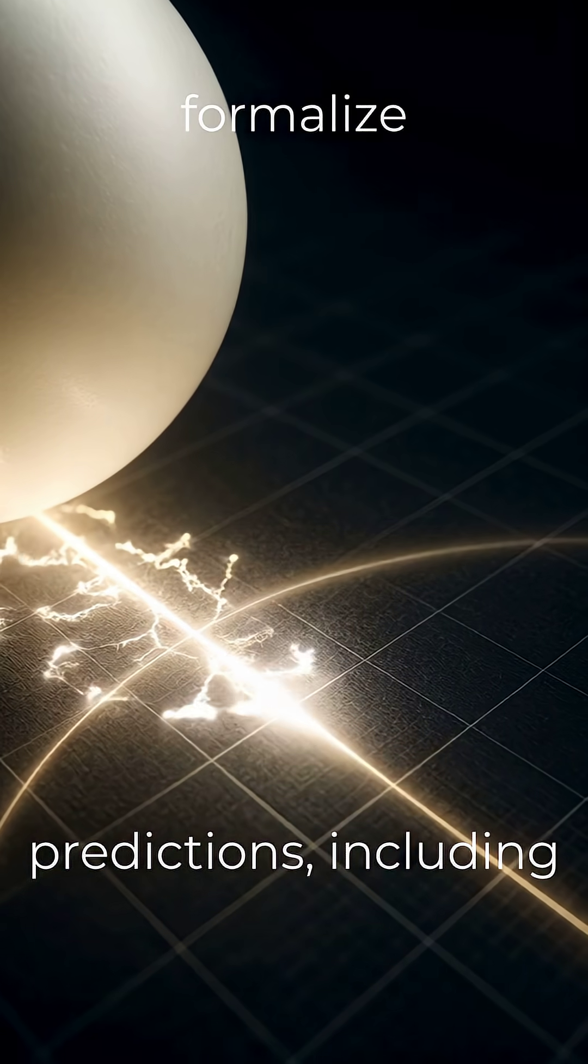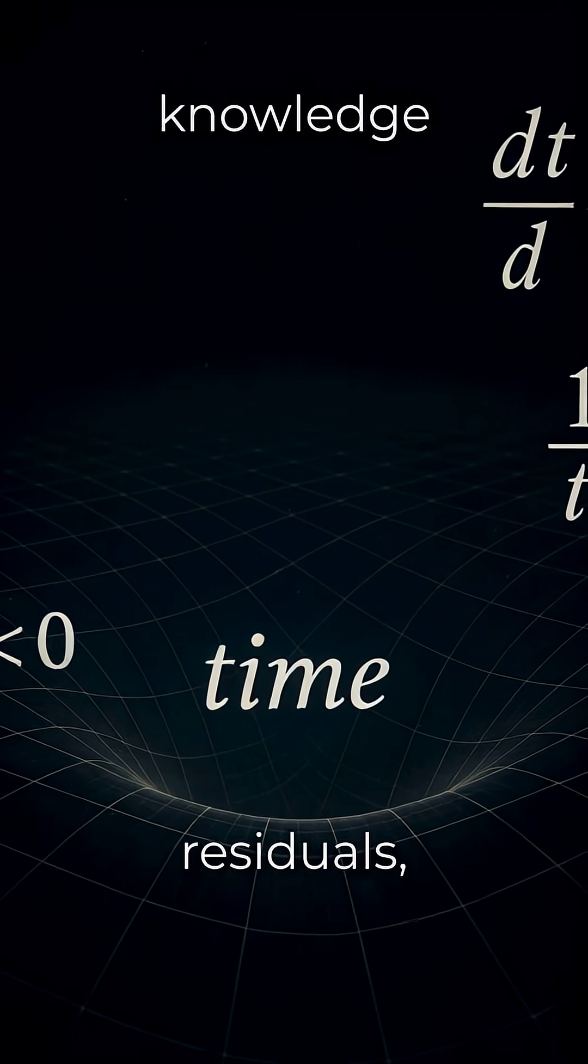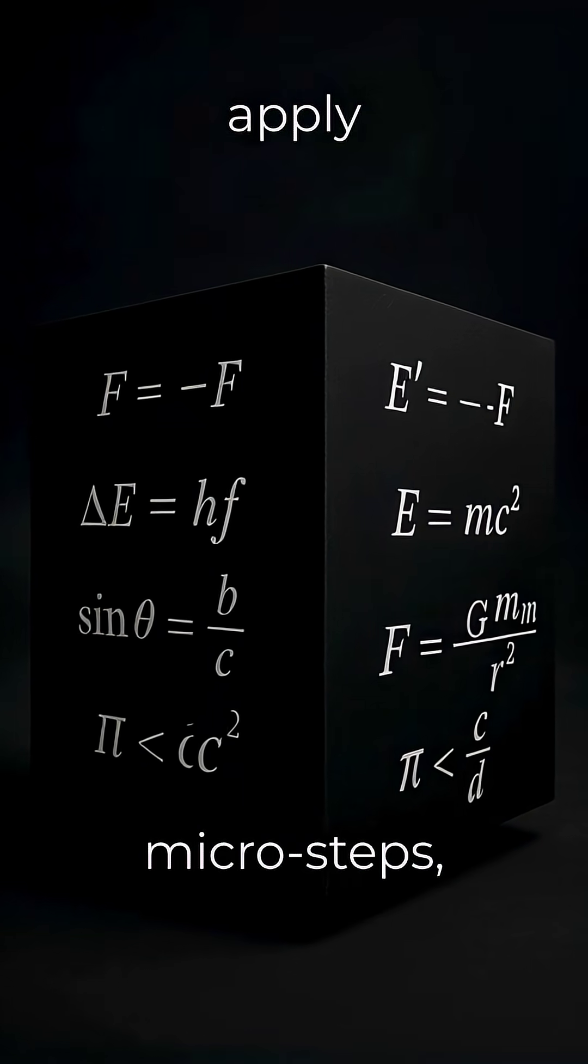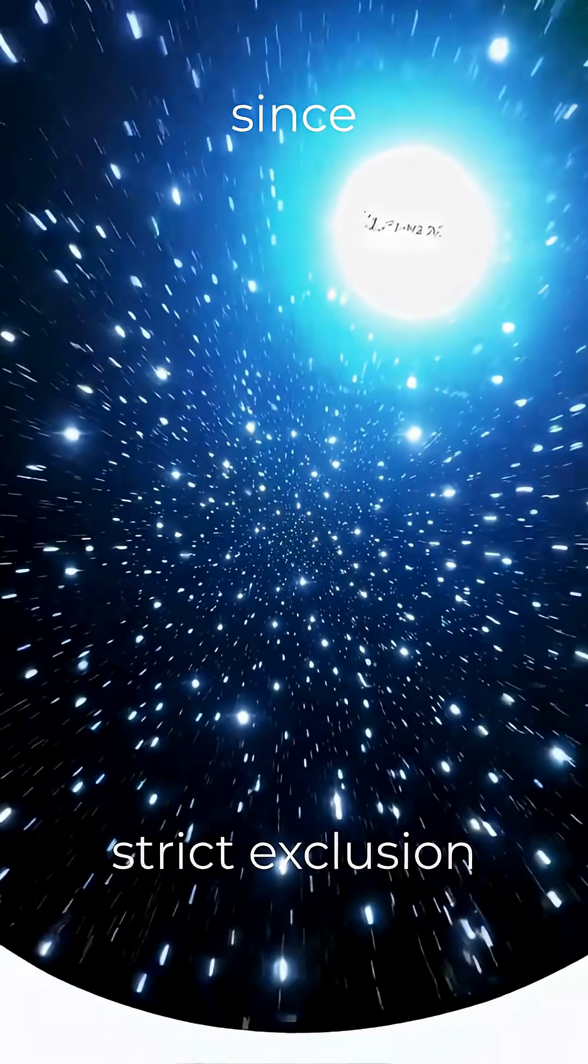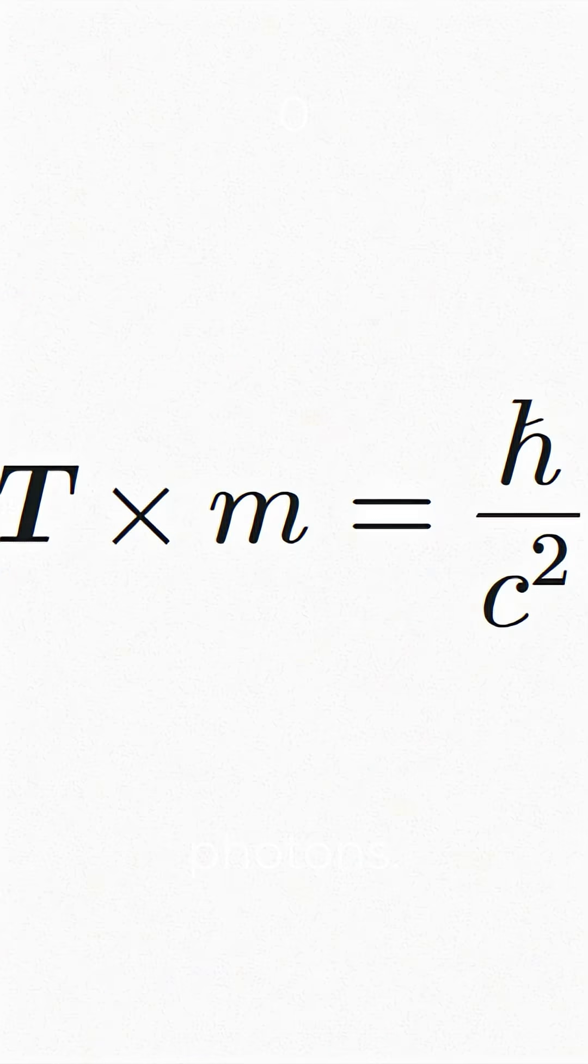We formalize the know-in-between lemma, showing that knowledge or awareness cannot apply to massless quanta since proper time τ=0 forbids internal evolution.